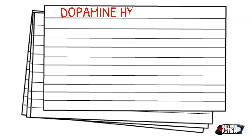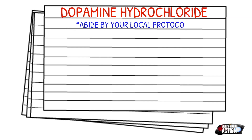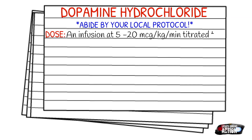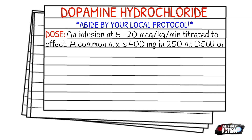Before we get into dosages, always abide by your local protocol — just because this is something I abide by doesn't mean your local protocol or scope of practice calls for it. The dose is going to be an infusion of 5 to 20 micrograms per kilogram per minute, titrated to effect. Once your patient starts showing the blood pressure or effects that you want, you titrate to that dosage. A common mix you'll see with dopamine is 400 milligrams in a 250 milliliter bag.